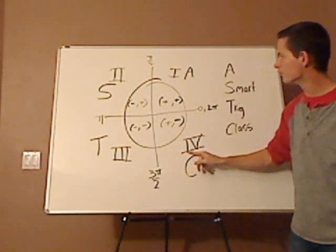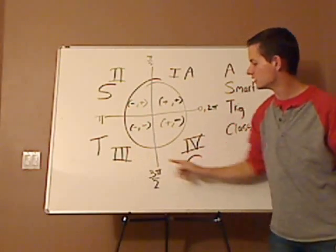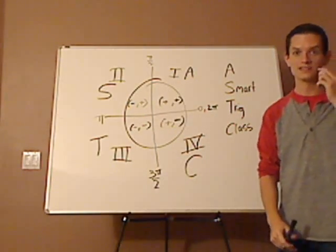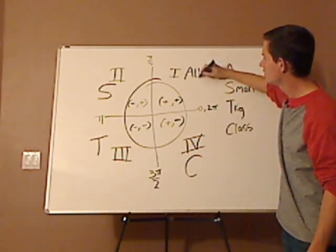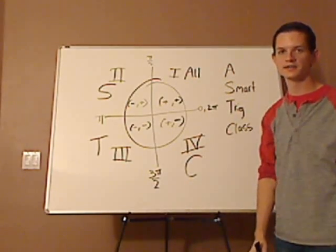And it's in the order that you see the quadrant, so 1, 2, 3, 4. A smart trig class. So what does that stand for? Well in quadrant 1, all are positive.